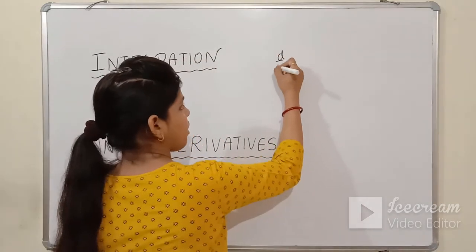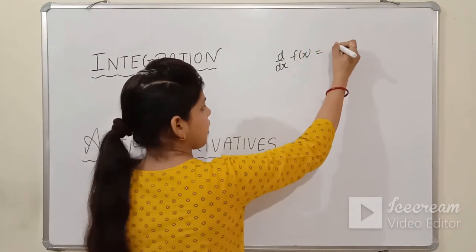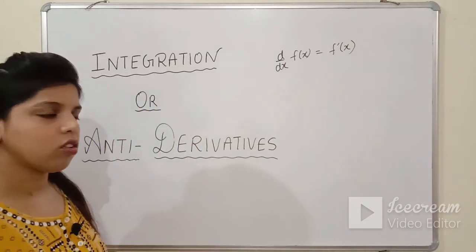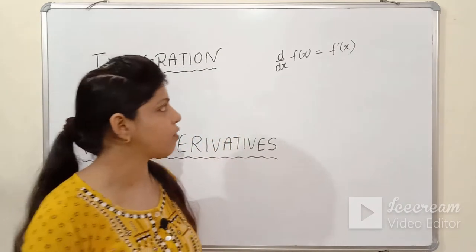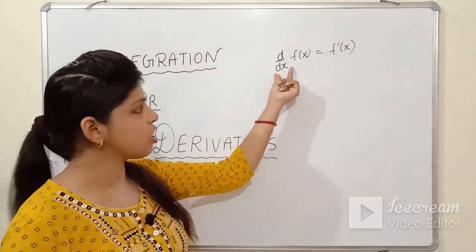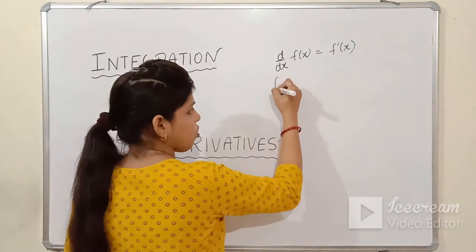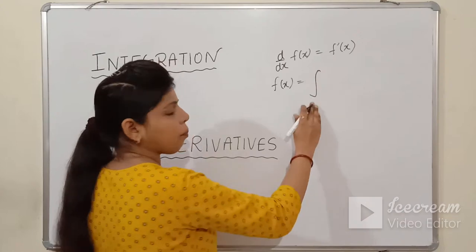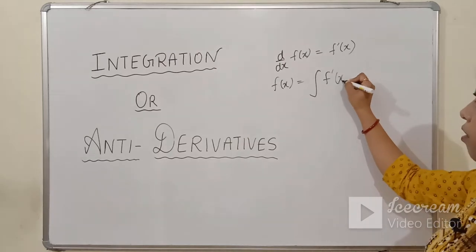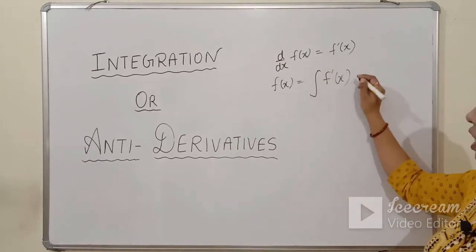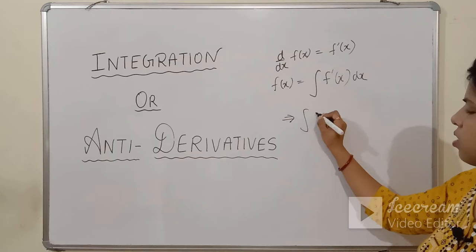All of you know that if we differentiate any function f(x) with respect to x, we get f'(x). In mathematics, the reverse of addition is subtraction, the reverse of multiplication is division. In the same way, when the d/dx differential operator is shifted to the right-hand side, it becomes the operator of integration. This symbol is the operator for integration, and it becomes f(x) = integration of f'(x) with respect to x.